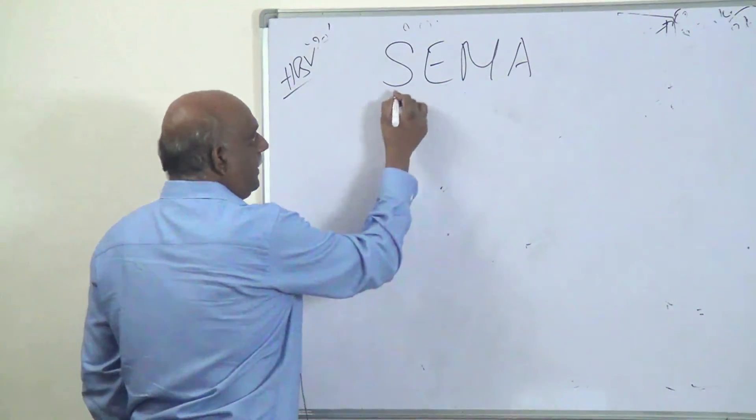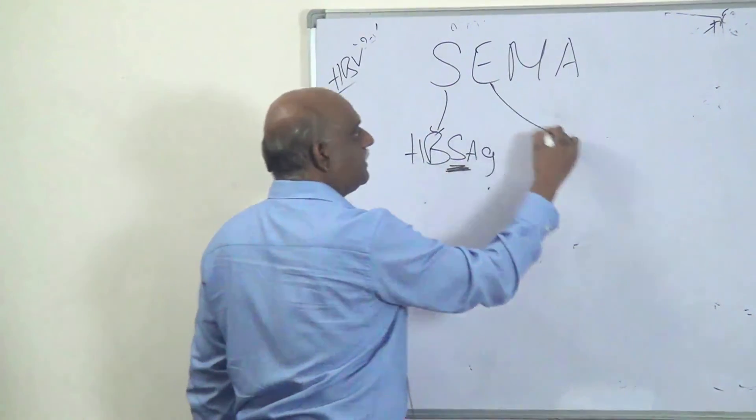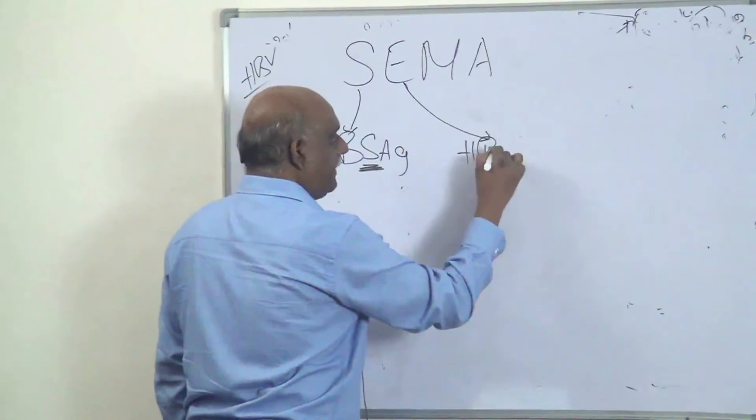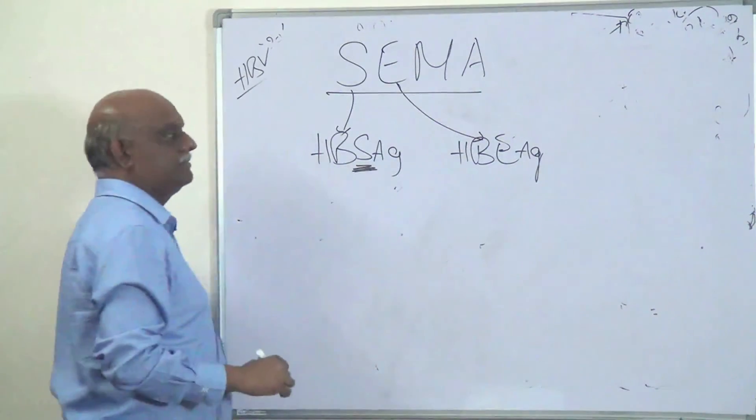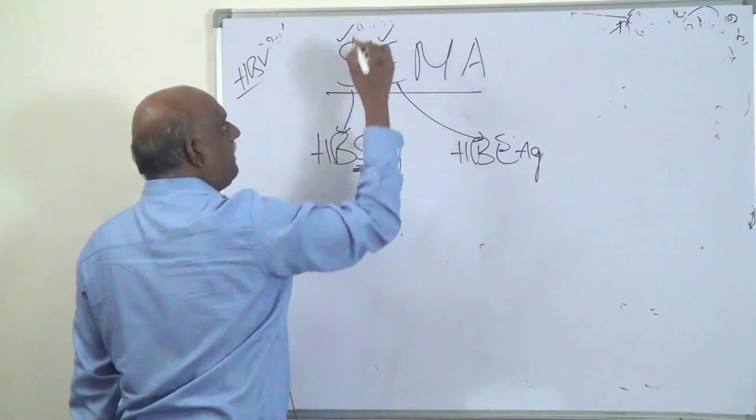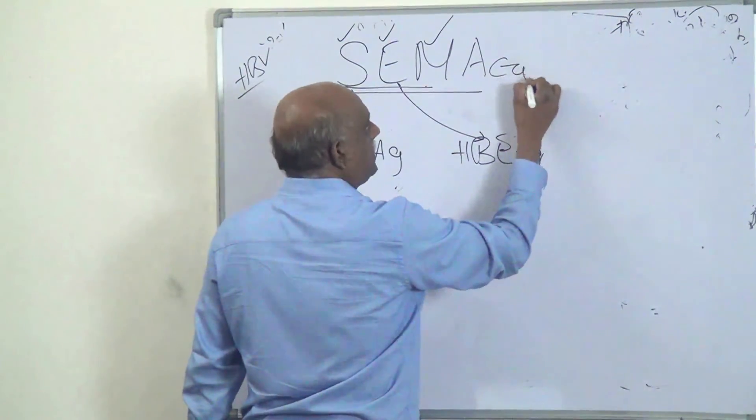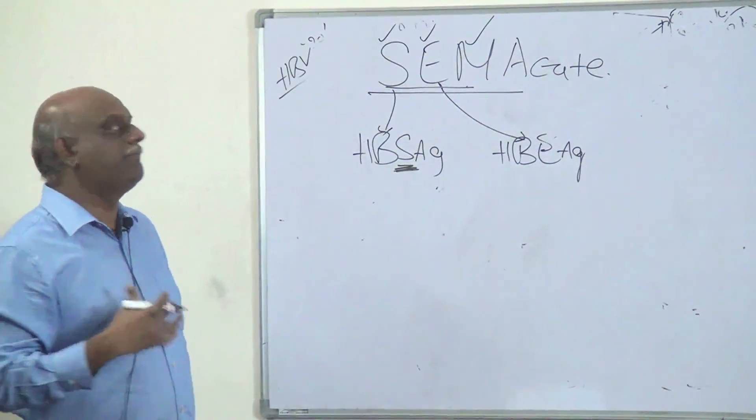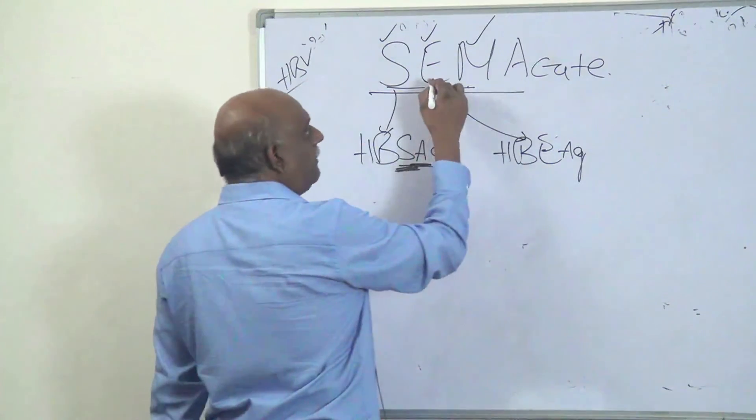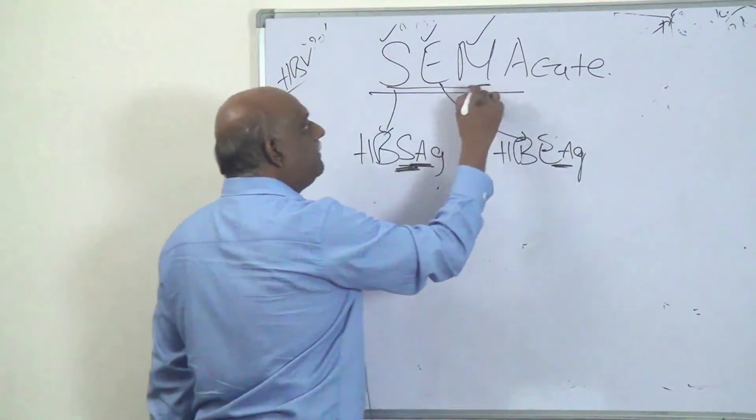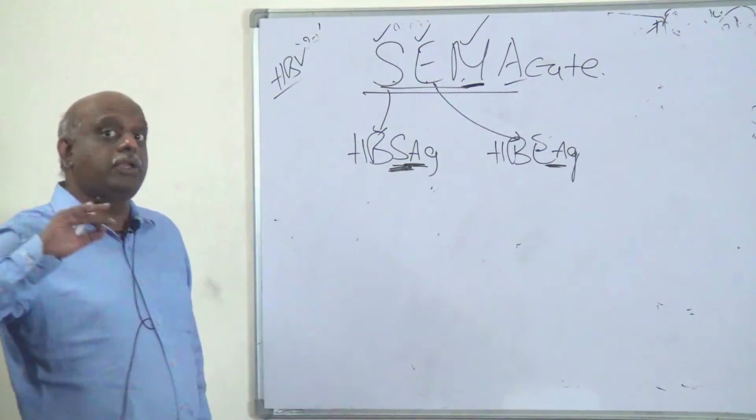CMA, you should remember when it comes to Hepatitis B serological markers. CMA kya hota hai? S is HBsAg, surface antigen, E is HBeAg, and IgM antibody. If these three things are there, it is acute infection. When Hepatitis B infection happens, surface antigen you will have, and envelope antigen you will have, and IgM type of antibody against the core antigen. When these three things are there, acute Hepatitis B infection.